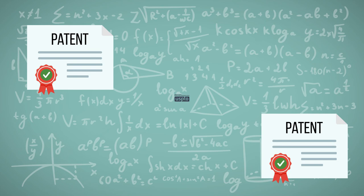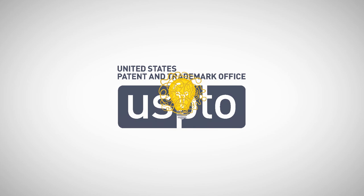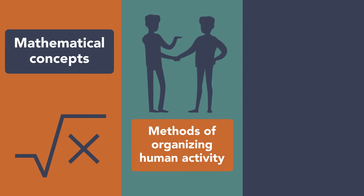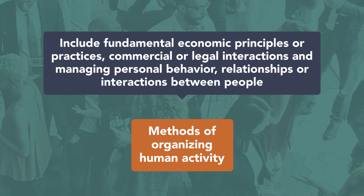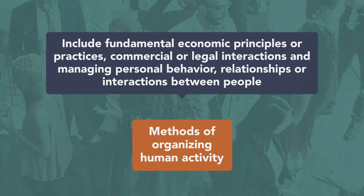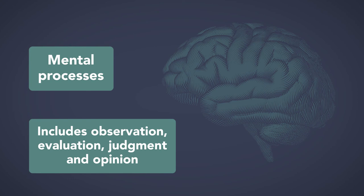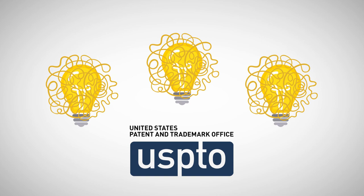The patent office synthesized key concepts from various decisions over the years since the Alice decision, grouping abstract ideas into three primary categories: mathematical concepts, methods of organizing human activity, and mental processes. Methods of organizing human activity include fundamental economic principles or practices, commercial or legal interactions, and managing personal behavior, relationships, or interactions between people. Mental processes include concepts performed in the human mind, including an observation, evaluation, judgment, and opinion. The patent office indicated that all of these abstract ideas could still be patentable if the claim recites additional elements that create a practical application of the abstract concept.